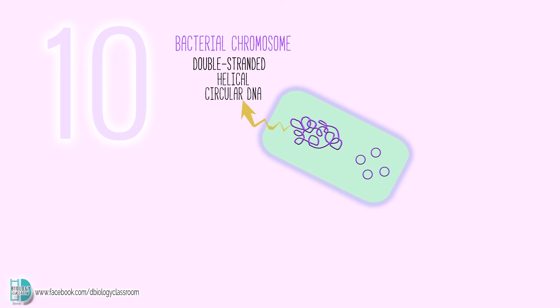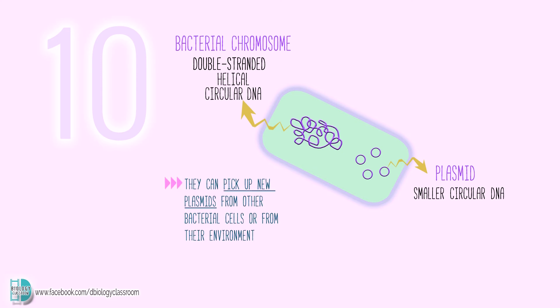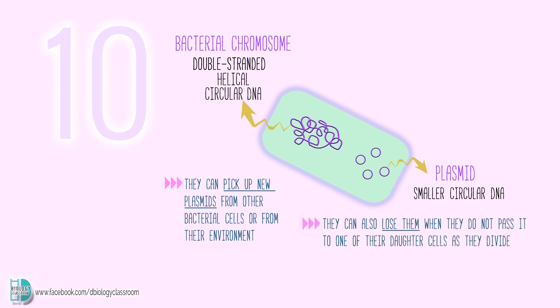However, bacteria may also contain multiple smaller circular DNA known as plasmids. They can pick up new plasmids from other bacteria cells or from their environment, but they can also lose them when they do not pass them to one of their daughter cells as they divide.